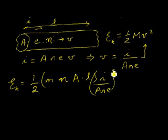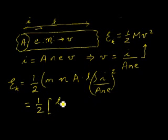And if you do the algebra carefully, make sure you don't lose any factors of 2 or anything like that, you end up with 1/2 times L m over A n e squared, times I squared.